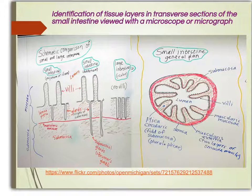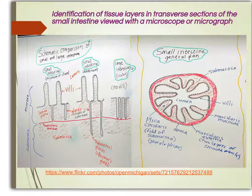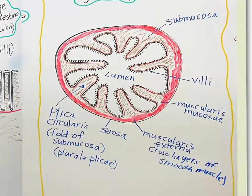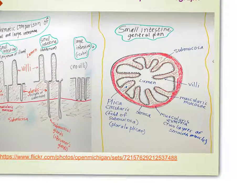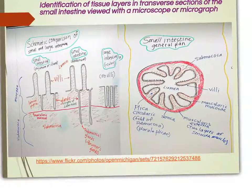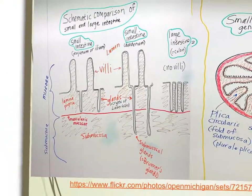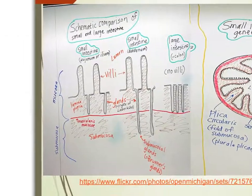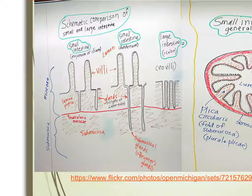The second skill is to learn about the different tissue layers in the transverse section of the small intestine. We will view this either with a microscope or from a micrograph. During classes we will draw these diagrams and identify different layers of cells, including both transverse section and longitudinal section views.